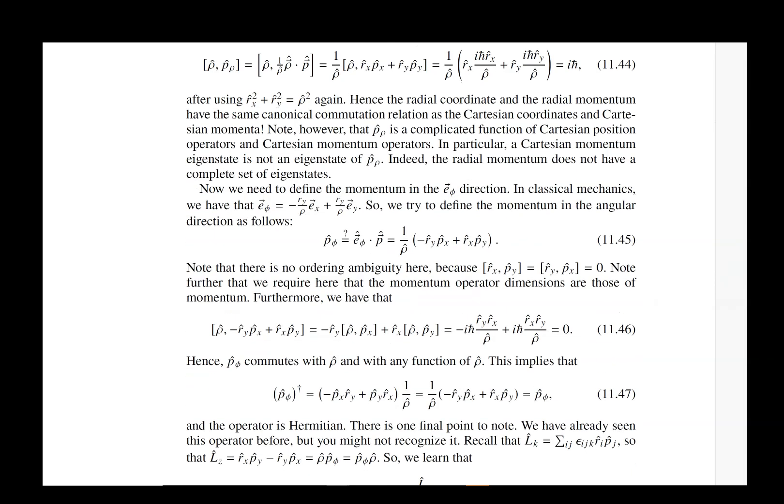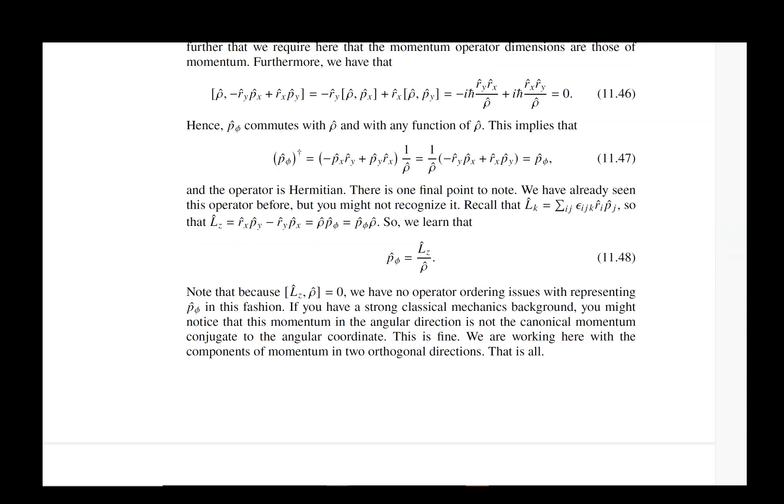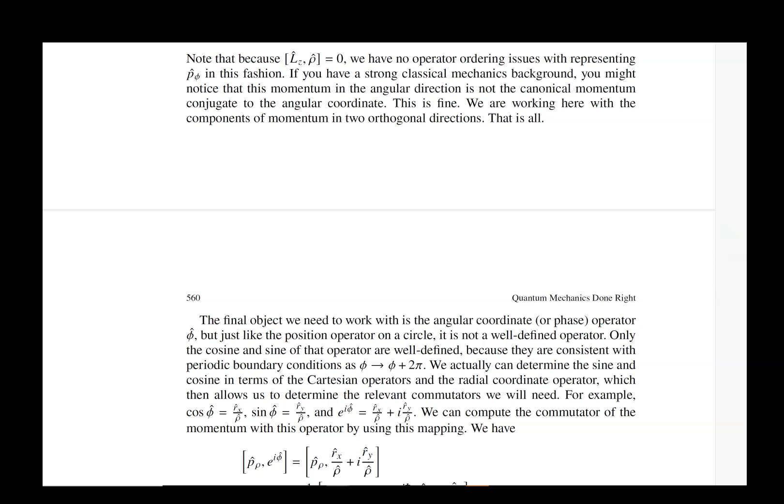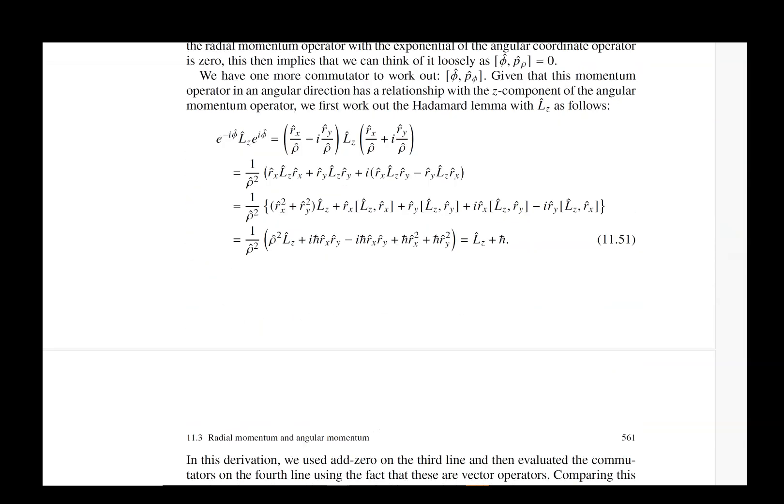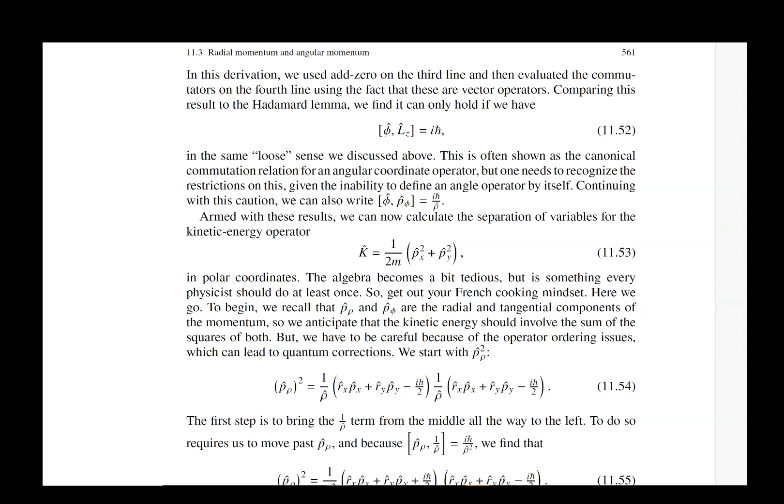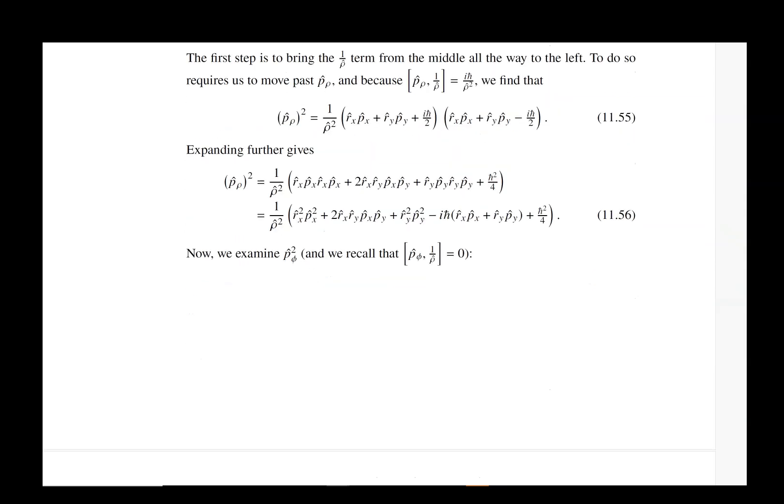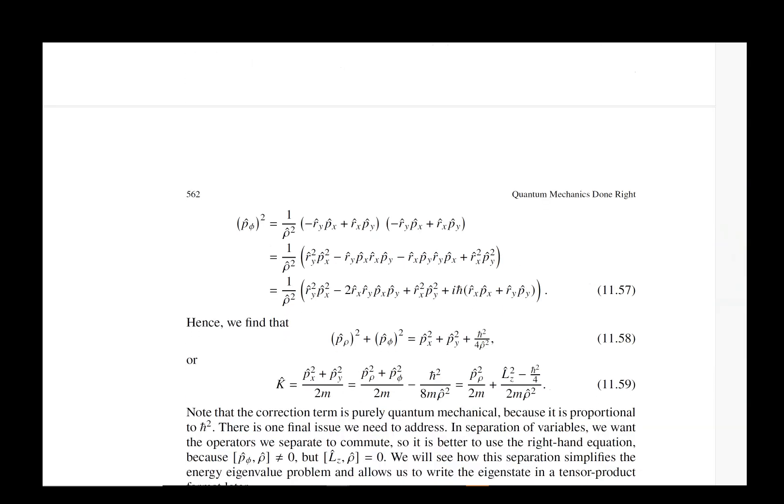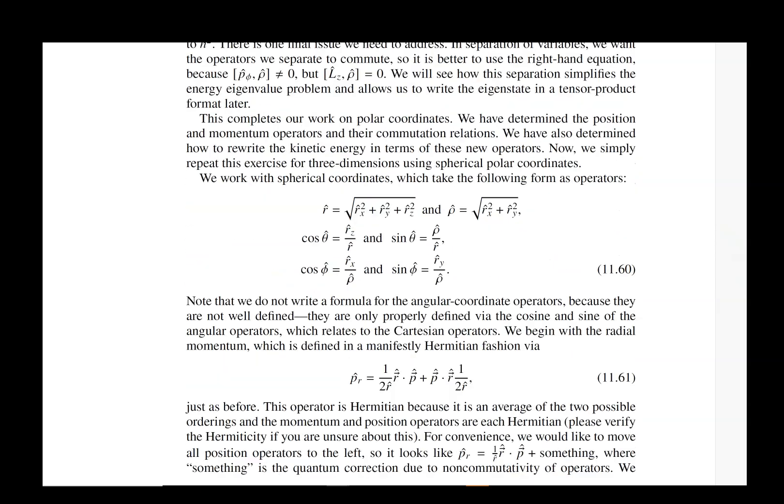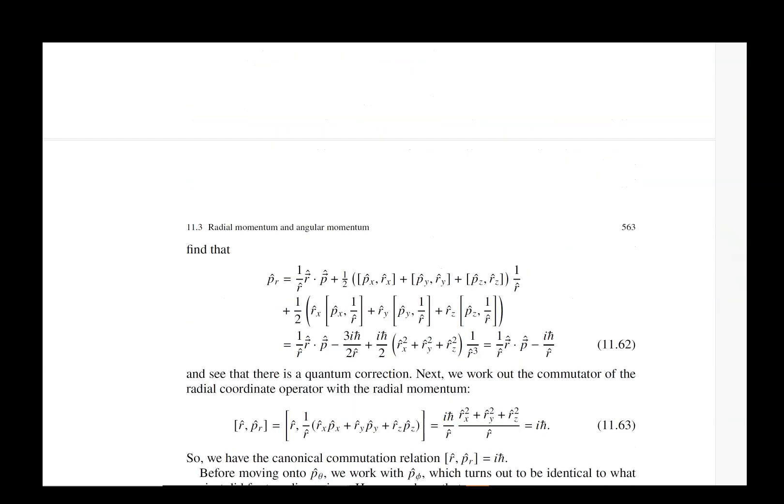Our operator techniques are very well suited to working out commutators of radial momentum with other things like position. But it takes a little bit of time—we have to work out a number of identities. This is again a French cooking phase. There's a fair amount of algebra, but everything follows from the canonical commutation relation and a clever application of our Leibniz rule.